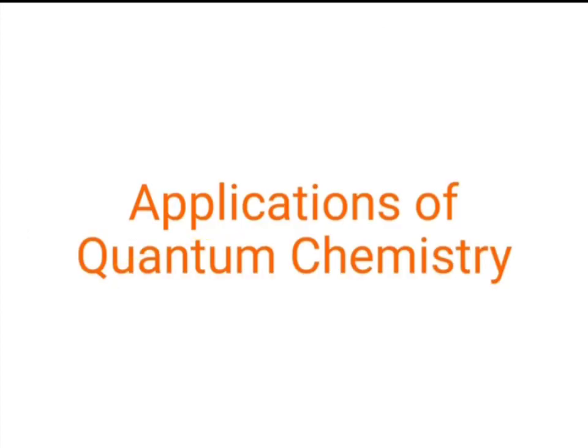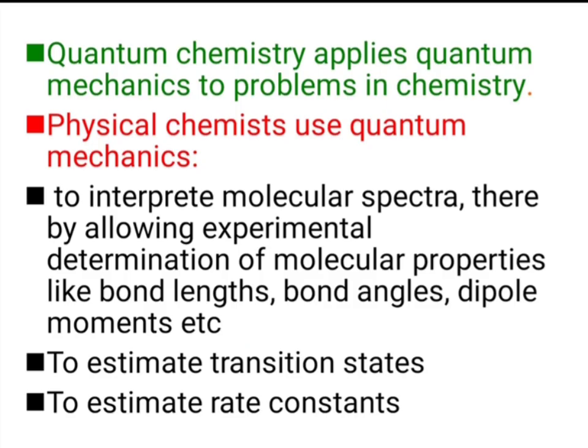Now we will see the applications of quantum mechanics in chemistry. Quantum chemistry applies quantum mechanics to solve problems in chemistry. Physical chemists use quantum mechanics to interpret molecular spectra, thereby allowing experimental determination of molecular properties such as bond lengths, bond angles, dipole moments, etc. Quantum mechanics can also be applied to estimate transition states and for estimation of rate constants.